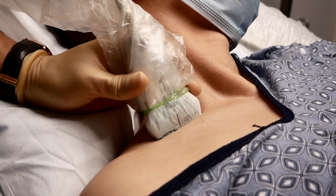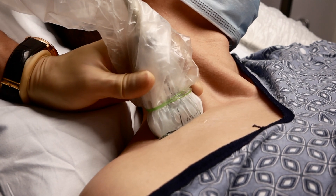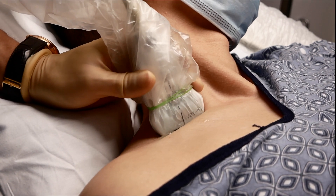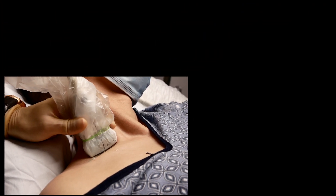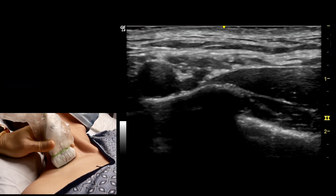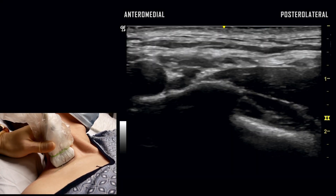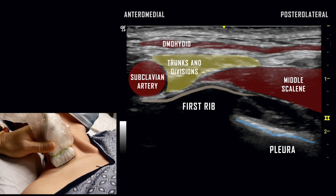The patient is positioned supine with the head turned away from the transducer. The transducer is placed at the supraclavicular notch. The first view obtained is that of the supraclavicular approach, where trunks and divisions of the brachial plexus are identified with key anatomic landmarks including the subclavian artery and first rib.